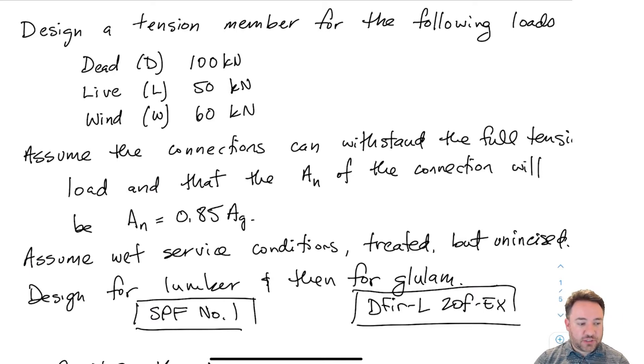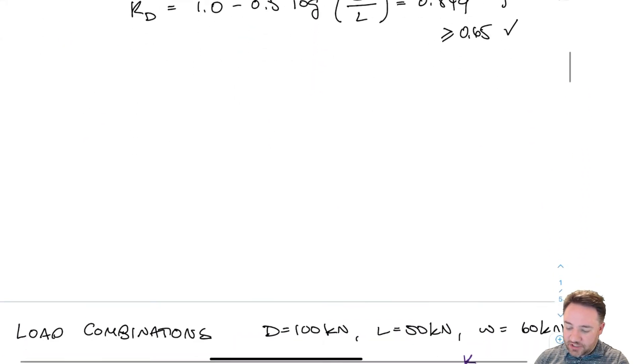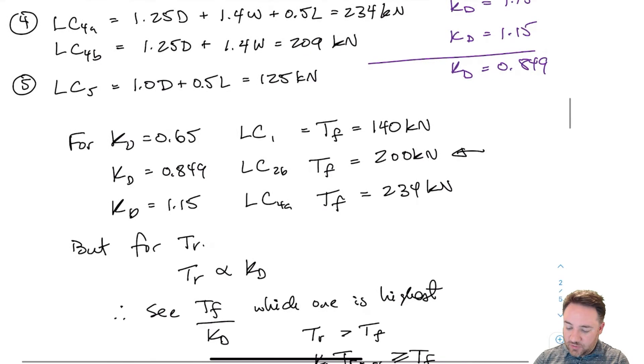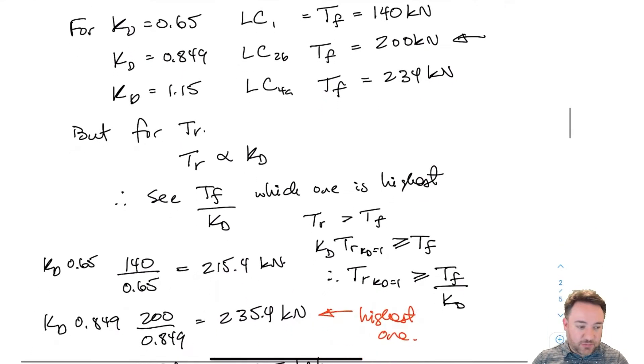Previously when we looked at this design for tension, we found all of the different load combinations that were possible for those three loads on the member. Then we determined which one was going to govern, which we happened to be able to do because this is tension design, but we can't always do this.